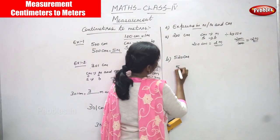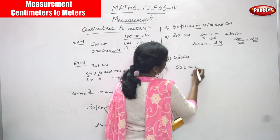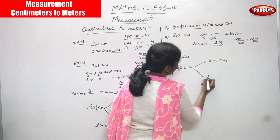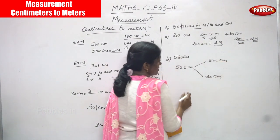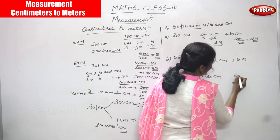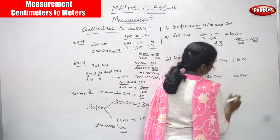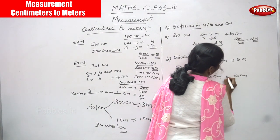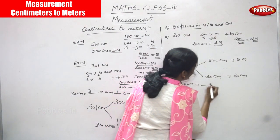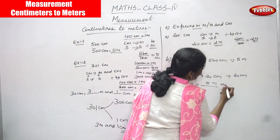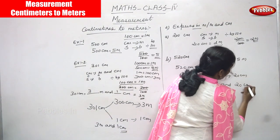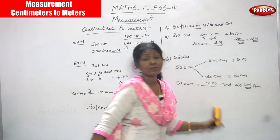Next one is 520 centimeters. Using the formula method: 500 centimeters then 20 centimeters — I have to segregate this. Then 500 centimeters becomes 5 meters. Then you have to write the 20 centimeters as it is. So 520 centimeters becomes 5 meters and 20 centimeters. This is the right answer for the question.